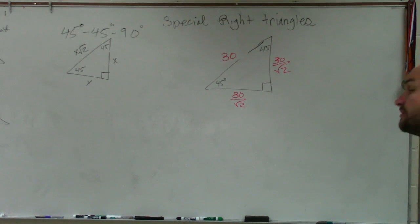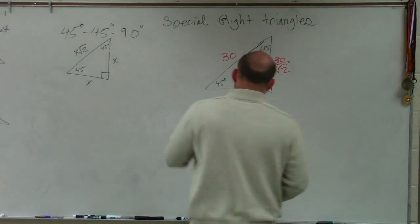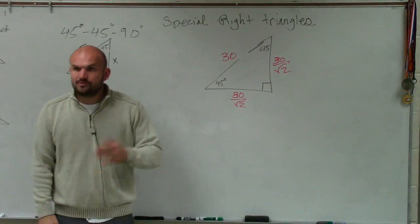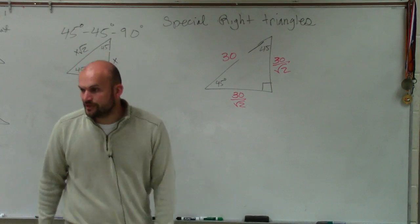No, it's the square root of 2. 30 divided by the square root of 2, which, again, you can approximate or leave it up on your own, all right?